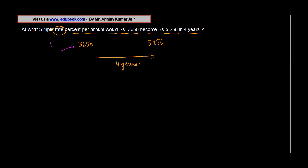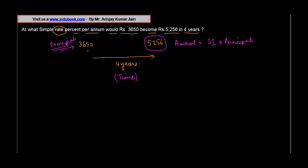The original amount is known as the principal — this is the amount which is invested. The ultimate amount is known as the amount, and the amount is the sum total of simple interest plus the principal. We are told that the time taken for the money to change from 3650 to 5256 is 4 years, and we need to find the rate of interest.